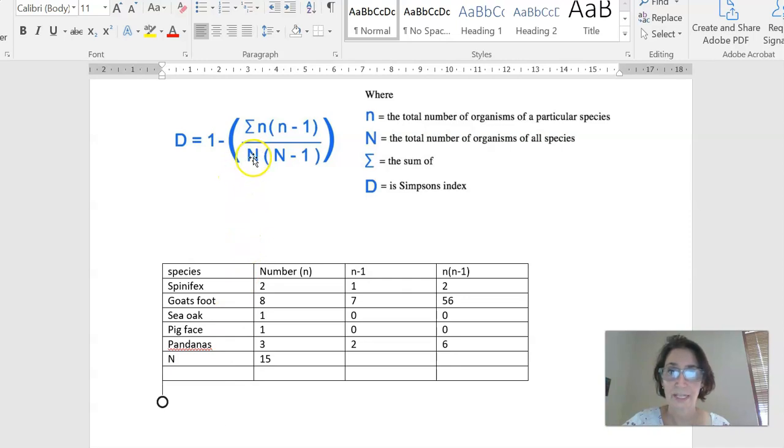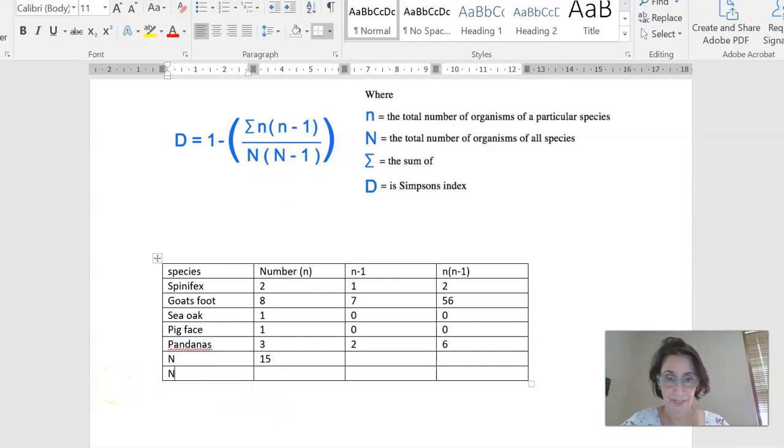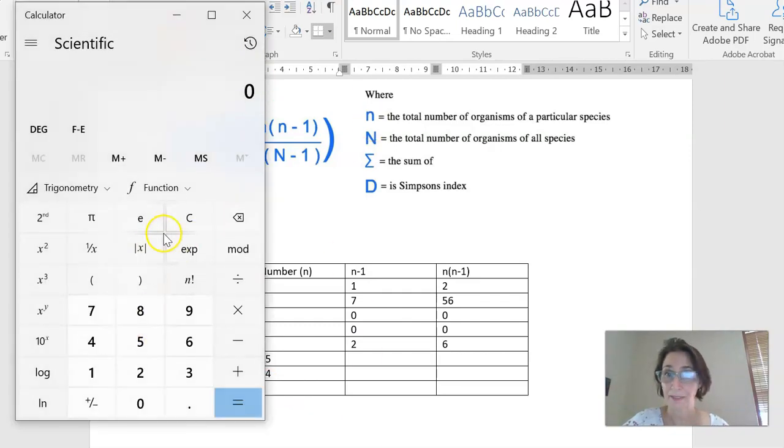Now, if you look down the bottom here, it says n multiplied by n minus 1. So I'm just going to work out here n minus 1, which will be this 15 minus 1. So 15 minus 1 is 14. And then the final thing we need to do is multiply those two numbers together. So 14 times 15, I can't do that in my head. So we'll bring up the calculator. 14 times 15 equals 210.